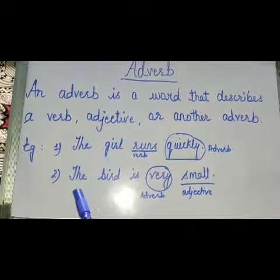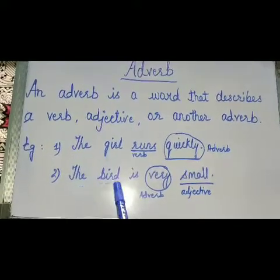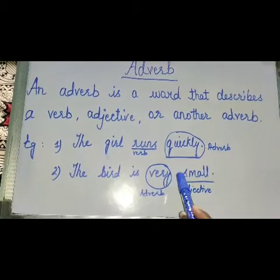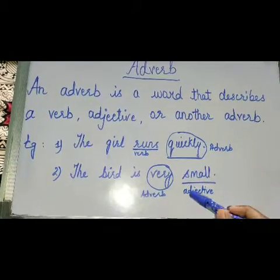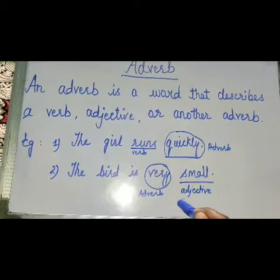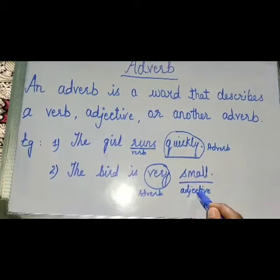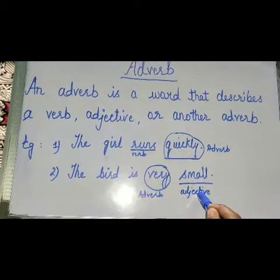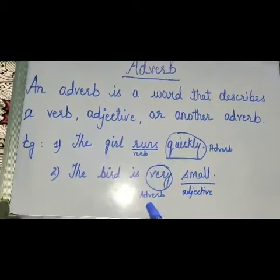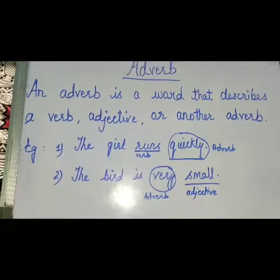Next example: the bird is very small. How is the bird? Small. So, small is the adjective and very is the adverb.